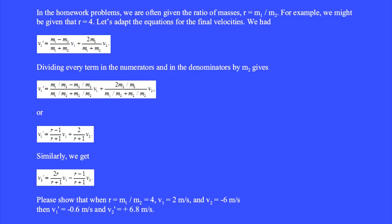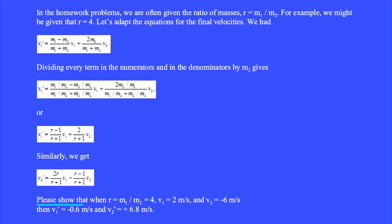In homework problems, we are often given the ratio of masses r equals m1 over m2. Dividing every term by m2 gives v1-prime equals (r minus 1) over (r plus 1) times v1 plus 2 over (r plus 1) times v2, and similarly for v2-prime. Please show that when r equals m1/m2 equals 4, v1 equals 2 m/s, and v2 equals minus 6 m/s, then v1-prime equals minus 6 m/s and v2-prime equals plus 6.8 m/s.